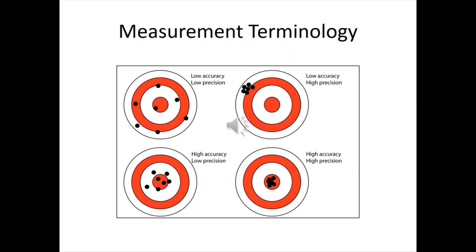Any time you talk about measurement terminology, you always see this bullseye. And if you look at the upper left-hand corner, you've got low accuracy, low precision. It means those bullets are just spread out everywhere, right? You don't know how to do it.